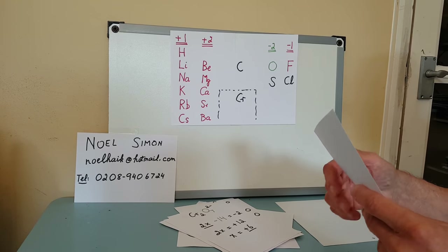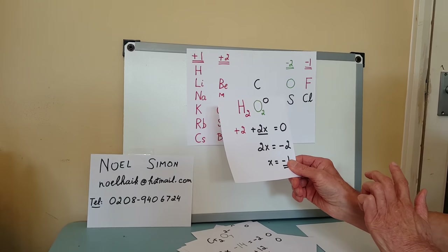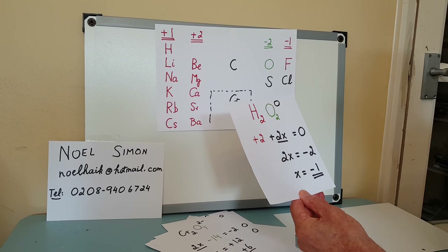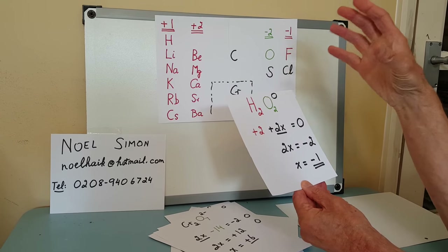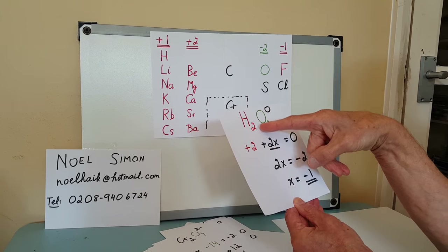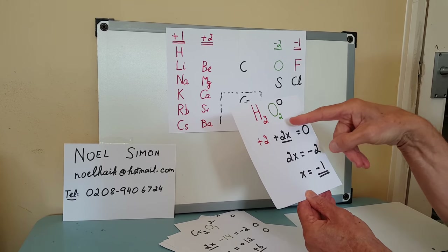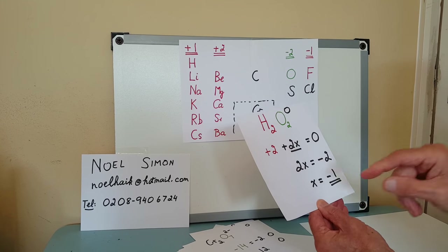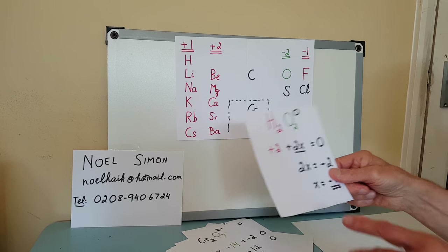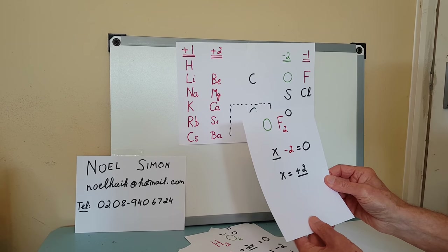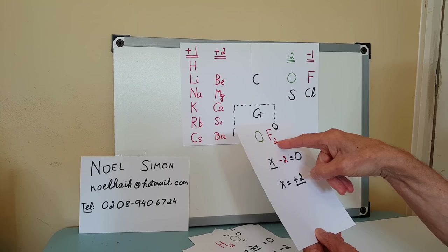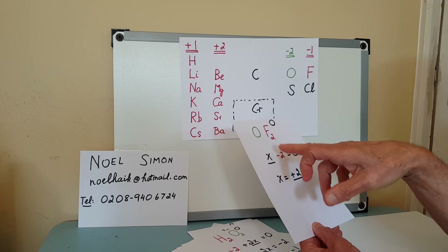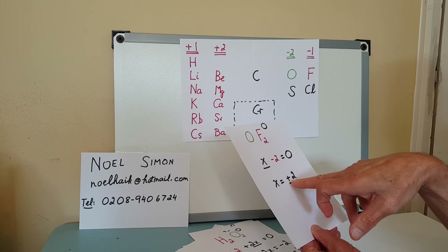Now a couple of odd ones. First, H₂O₂. Oxygen is competing with something fixed — hydrogen. Two hydrogens give +2; two oxygens are 2x; the molecule is zero overall. So x = −1: oxygen has an oxidation number of −1 in hydrogen peroxide. The last one is OF₂. Here oxygen is up against the only element more electronegative than itself — fluorine. So fluorine is −1 each, giving −2 total; oxygen must be +2.